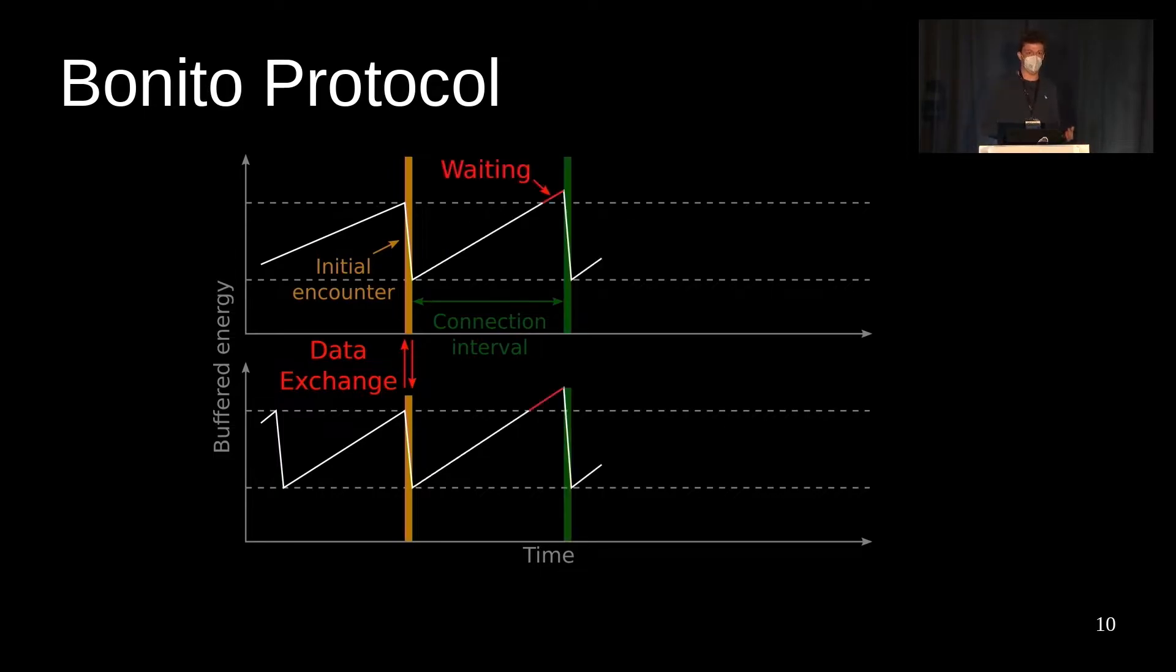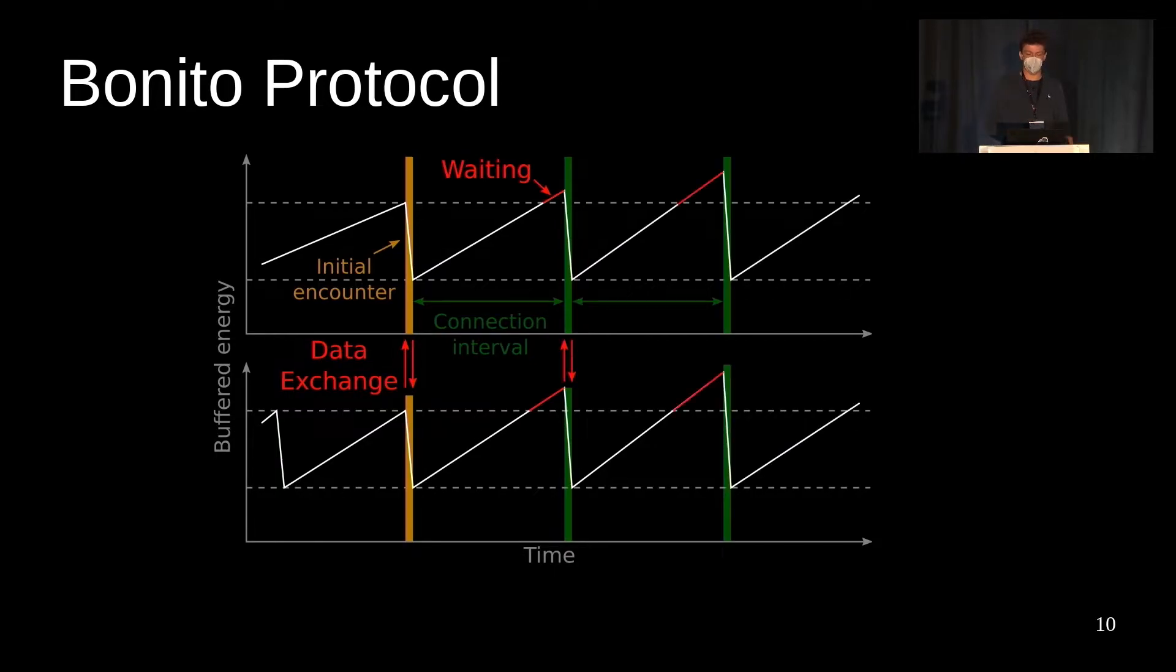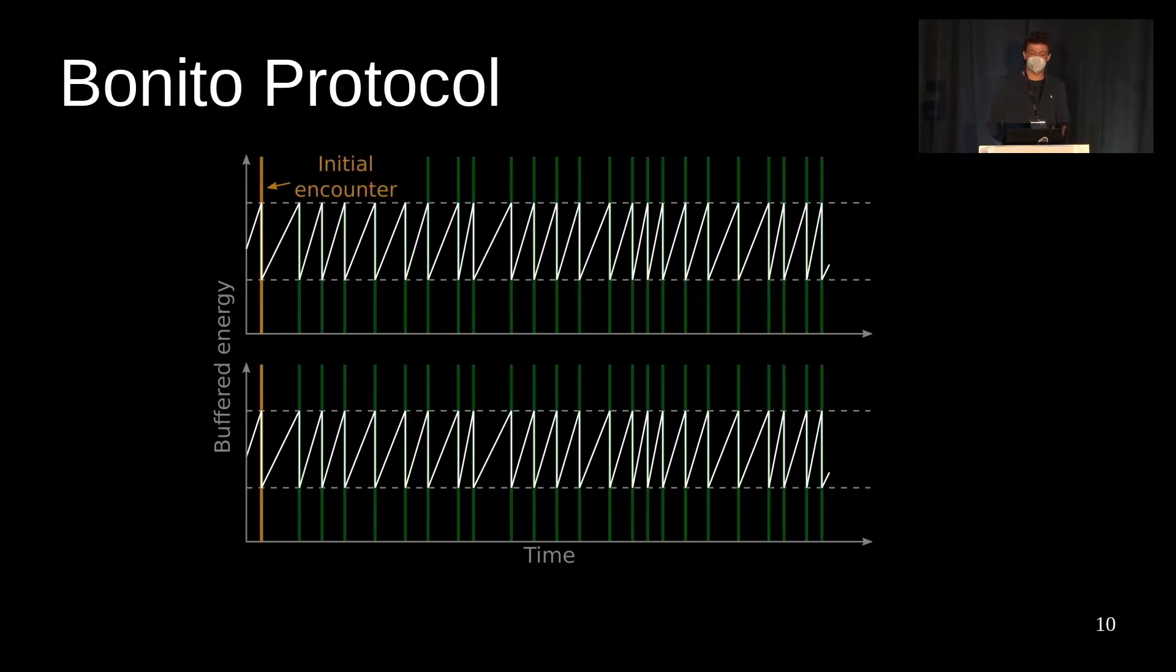Instead of waking up immediately after reaching the turn-on threshold, the devices wait until the connection interval has passed, and then they wake up at the same time. And because they can communicate again, they can also agree on the next connection interval and so on. These connections can last over hundreds of wake-ups during which the devices can exchange data at every wake-up, dramatically increasing the throughput.